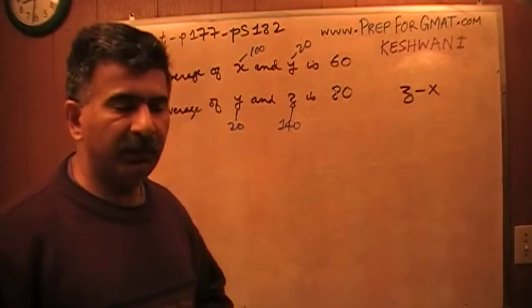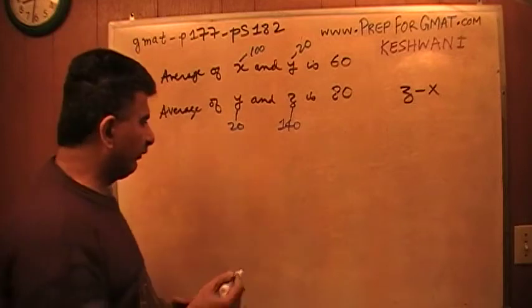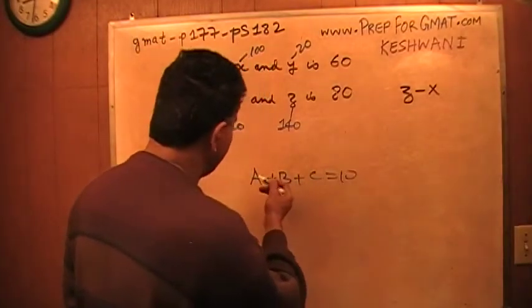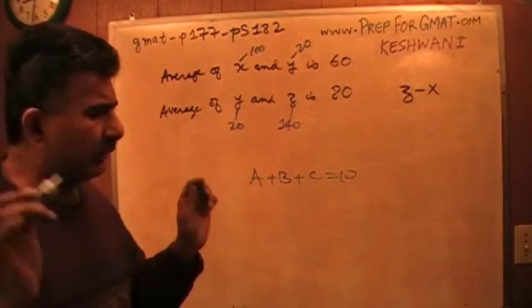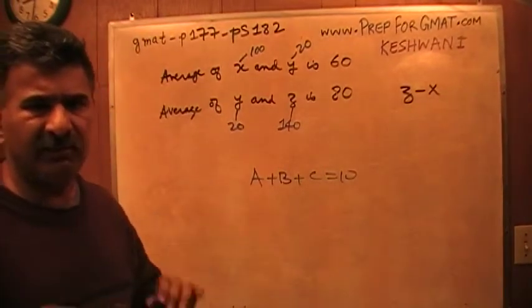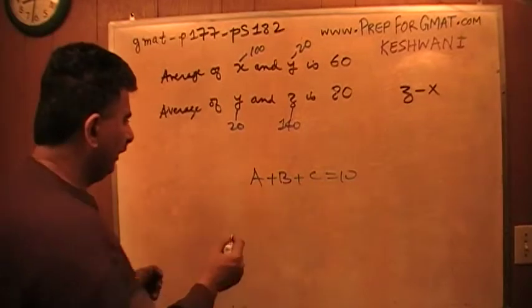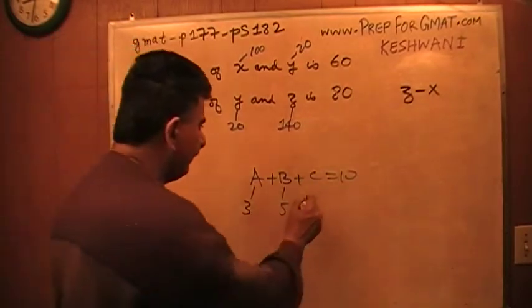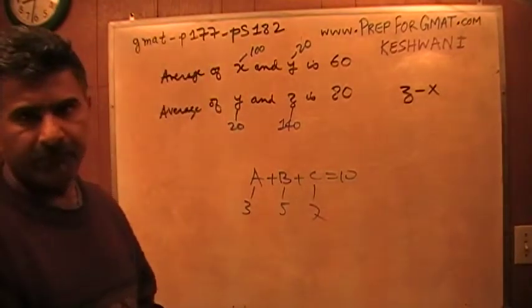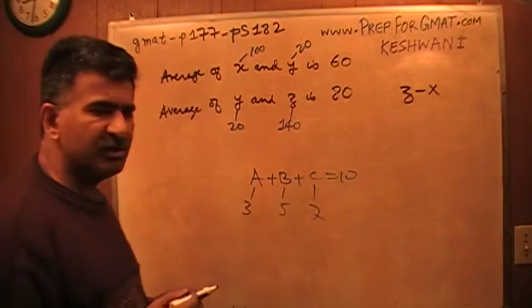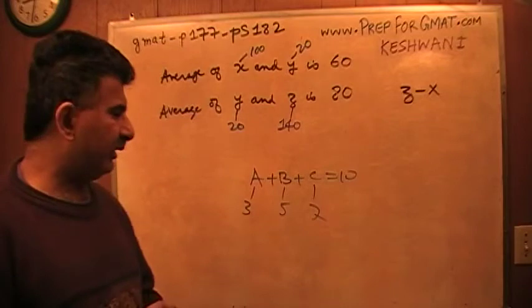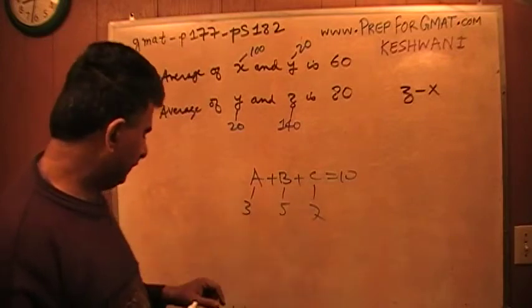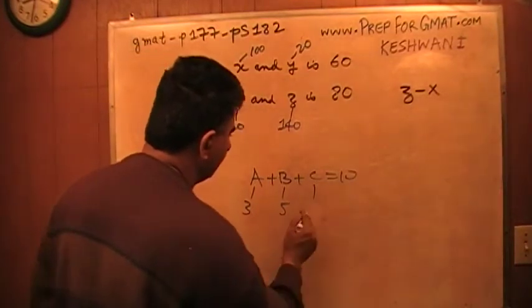If there are three variables, you cannot plug in values for all three of the variables. For example, if I tell you that A plus B plus C equals 10, you can plug in anything you want for A and B. Anything at all. Anything. Fractions, decimals, negative numbers, positive numbers, anything you want. For example, if I tell you that A is 3 and B is 5, can I go ahead and plug in something else here for C? Of course not. Because there are three variables, which means I have a luxury of plugging in only two variables. 3 and 5, once I plug in, that's 8. C would have to be 2.